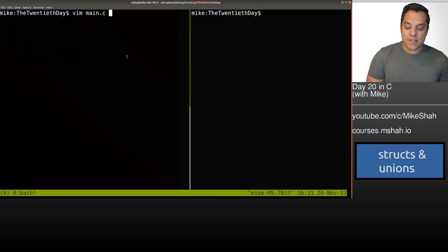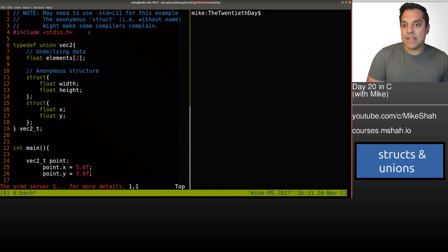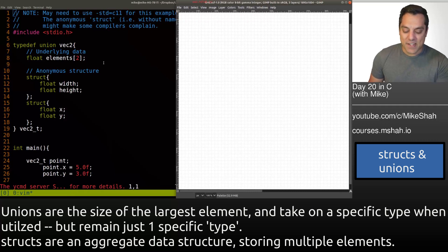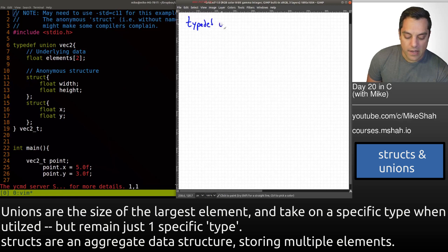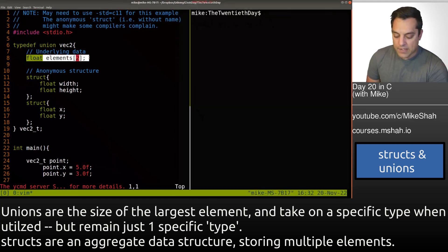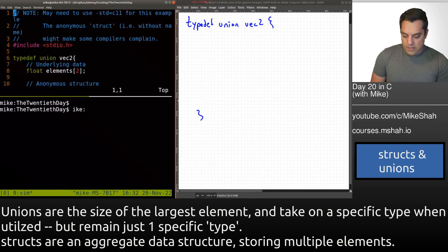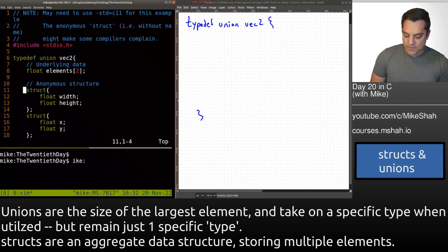Alright, with that said, let's go ahead and step into it here. And what I'm going to go ahead and do here is open up a main C file here. And you're going to go ahead and see just one type defed union here. So recall what a union is, a union is something that takes the type of the largest data type in your union. So what does that mean here, let's go ahead and structure this just a little bit here.